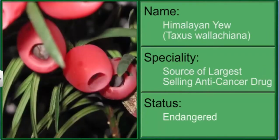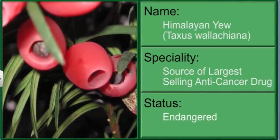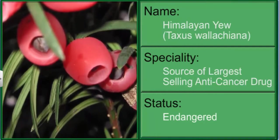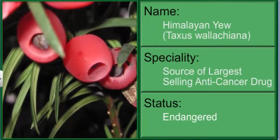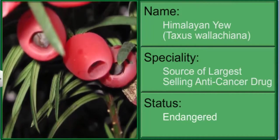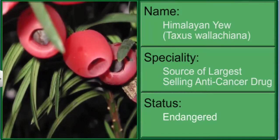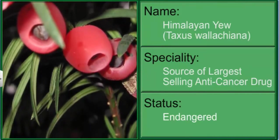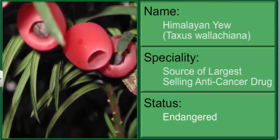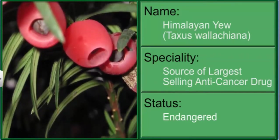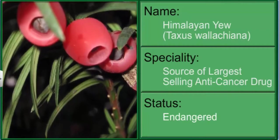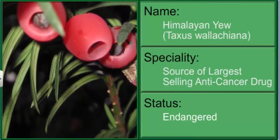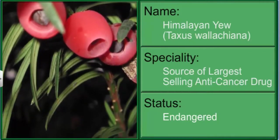The Himalayan yew is a medicinal plant found in Himachal Pradesh and Arunachal Pradesh. The bark, needles, and roots of this plant yield a substance called taxol, which is used to treat several types of cancer. Thousands of Himalayan yew trees have dried up in the last decade due to over-exploitation. Today, the species is endangered.